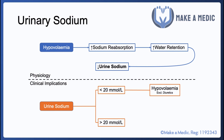The caveat is that diuretics cause hypovolemia but work by targeting the kidneys and increasing salt excretion, so they would not cause a low urine sodium. If urine sodium is high — above 20 mmol/L — that is suggestive of diuretic use or euvolemic causes of hyponatremia.